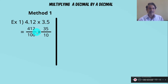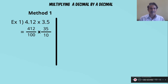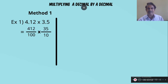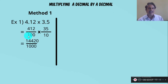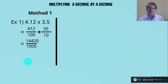Now multiply by applying fraction multiplication: multiply the numerator by the numerator and the denominator by the denominator. So 412 into 35 is 14,420. And 100 into 10 is 1000. Now we convert this into a decimal fraction. The denominator is 1000, so there should be 3 decimal places in the decimal part.